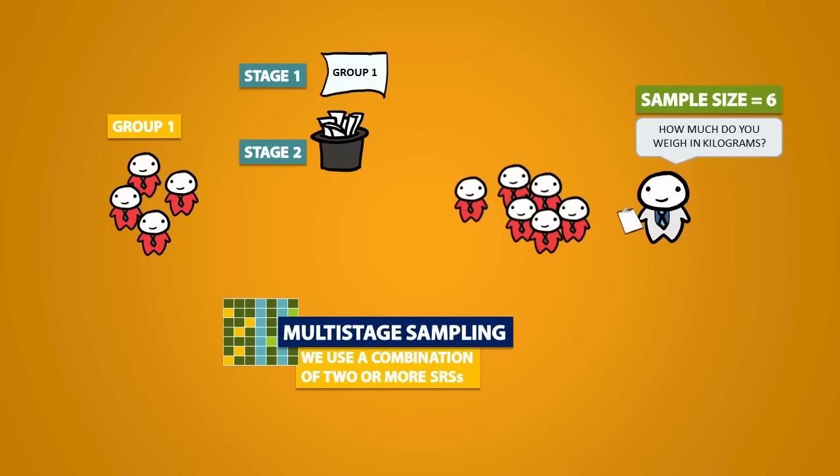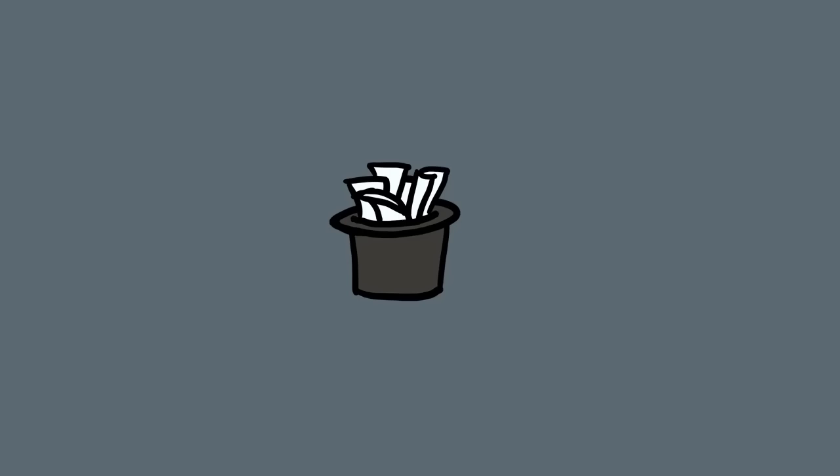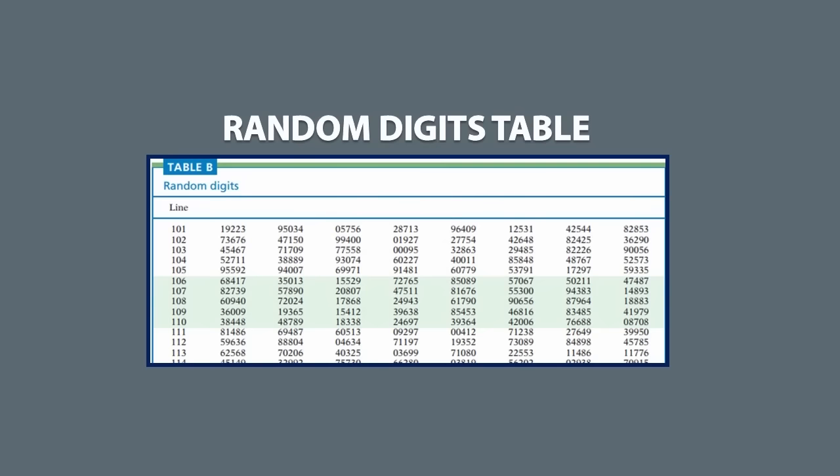I'd like to point out that instead of putting names in a hat, there's another way to pick things randomly. We can use something called the random digits table. The random digits table consists of a long string of random numbers, and it can help us do an SRS.